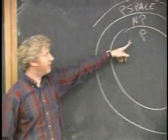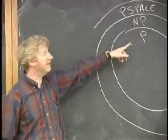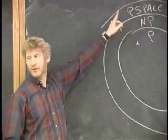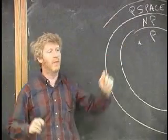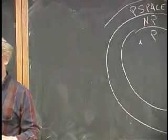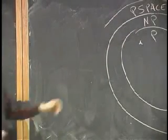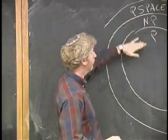But certainly, if you have something that uses only 30 steps, it's got to use at least 30 symbols. If you have something that uses 30 symbols, it might use a lot more than 30 steps. Questions about that? So that implies this relationship.